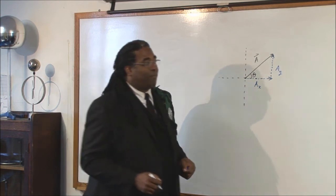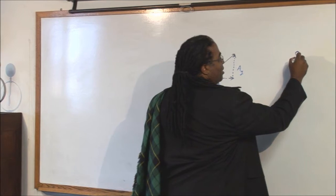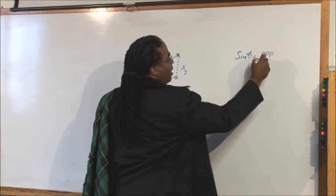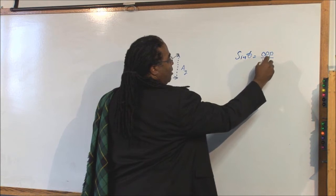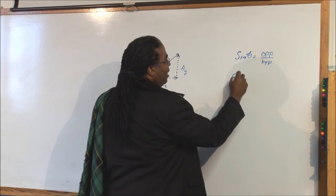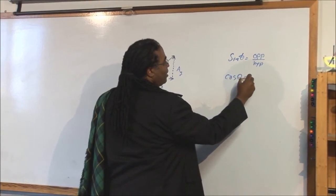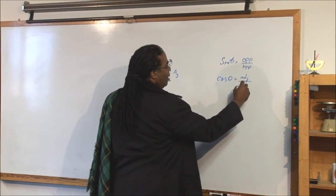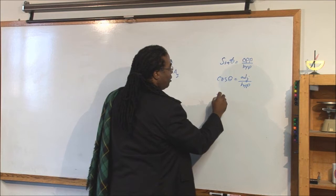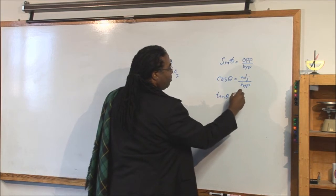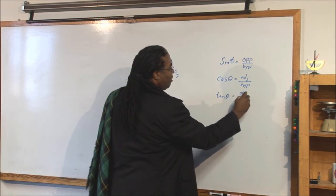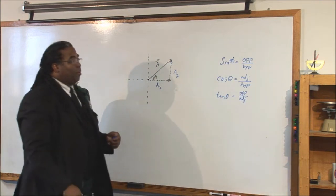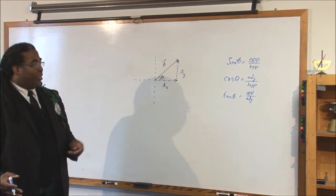Sine theta is equal to the opposite side of the triangle over the hypotenuse. Cosine theta is equal to the adjacent side over the hypotenuse. And tangent theta is equal to the opposite side over the adjacent side. What does that mean?